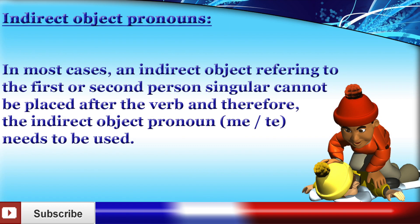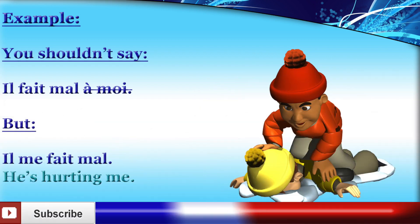Something else you need to be aware of is that in most cases, an indirect object referring to the first or second person singular cannot be placed after the verb. And therefore, the indirect object pronoun me or te needs to be used instead. For example, you shouldn't say il fait mal à moi, but il me fait mal — he is hurting me.